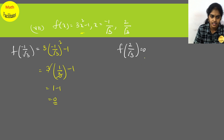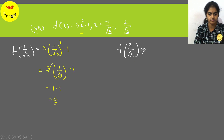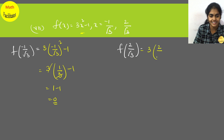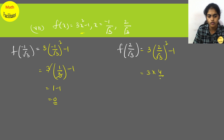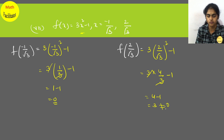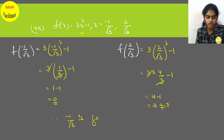Now substituting x = 2/√3 into f(x) = 3x² minus 1: 3 into (2/√3)² minus 1 equals 3 into (4/3) minus 1. The 3s cancel, giving 4 minus 1 equals 3. This is not equal to 0. Therefore −1/√3 is a zero of the polynomial, but 2/√3 is not a zero.